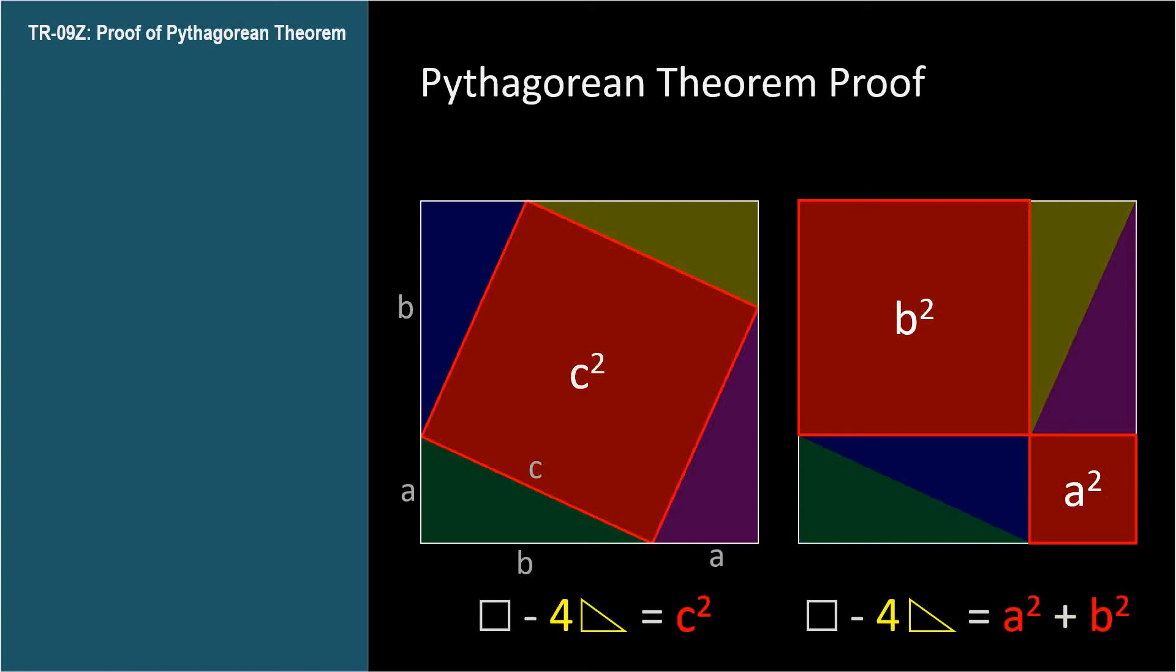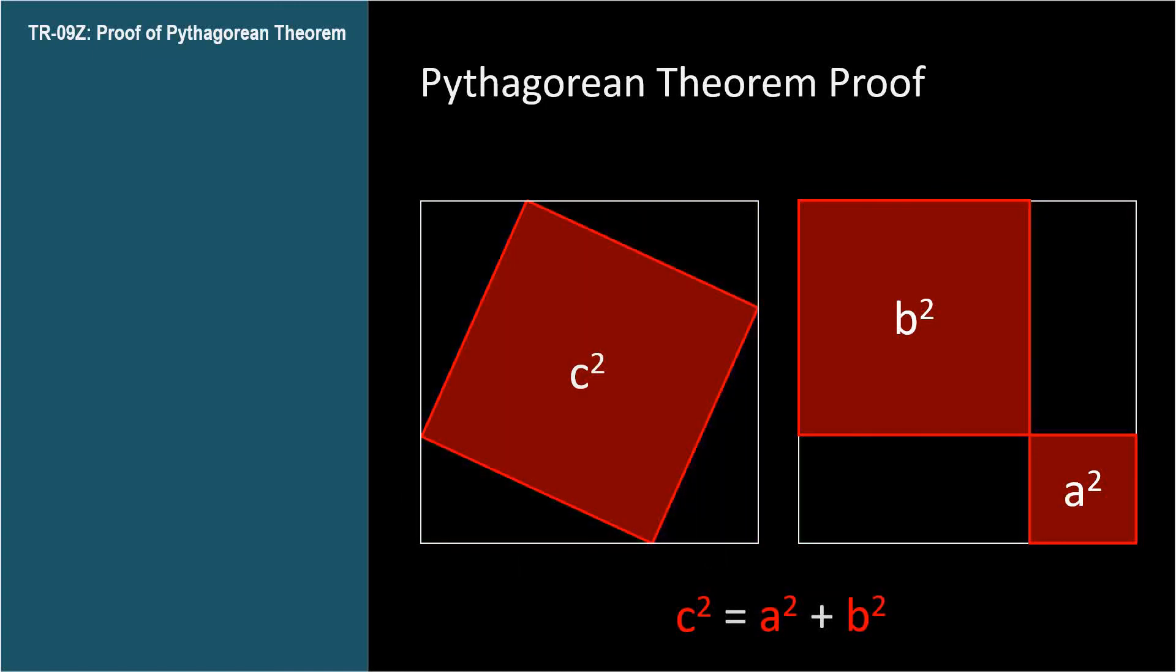Two things equal to the same thing are equal to each other, so C squared equals A squared plus B squared, and we've proven the Pythagorean theorem.